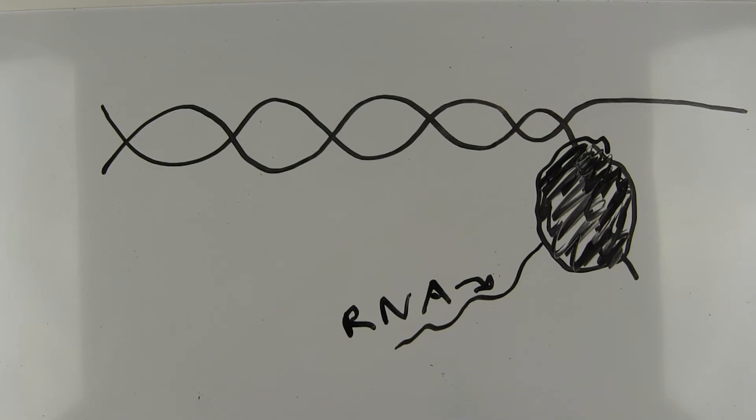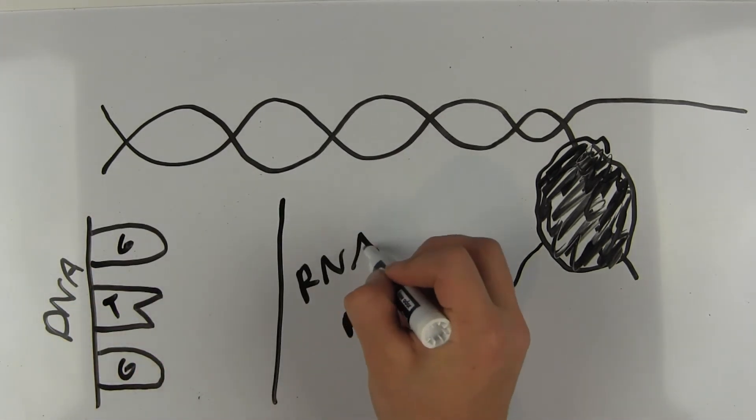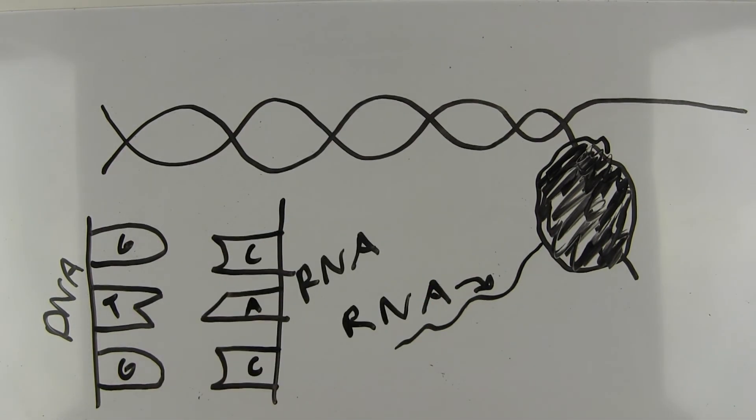RNA is created when the particle reads the one-sided DNA that it split off and then matches each nucleotide on that string with the nucleotide that matches it. That matching piece then adds to the RNA strand.